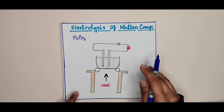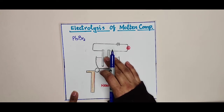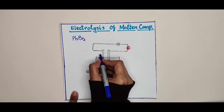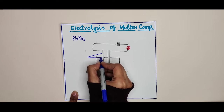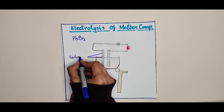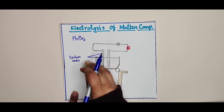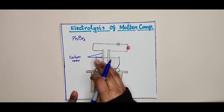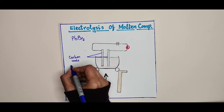We will use two electrodes. These electrodes are graphite electrodes, also called carbon rods. So carbon rods will be used as electrodes. Both of these are our electrodes.